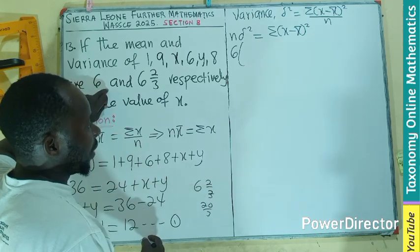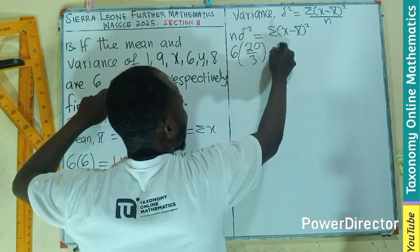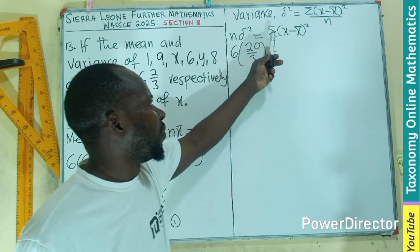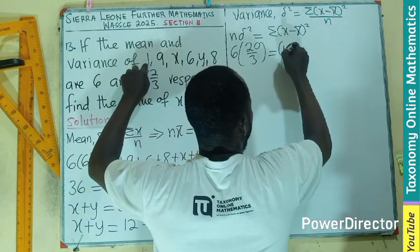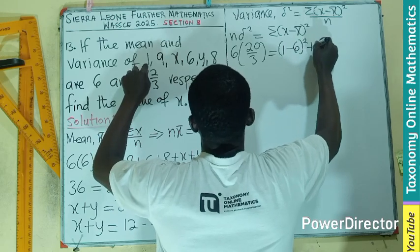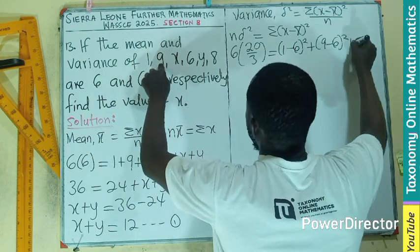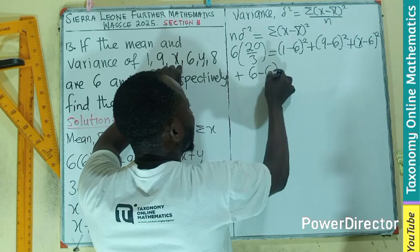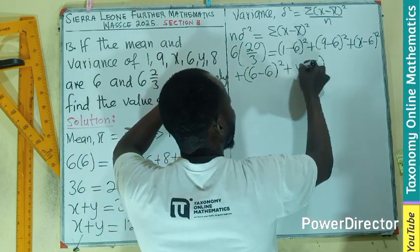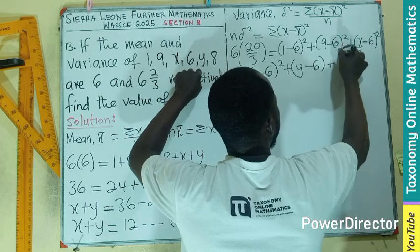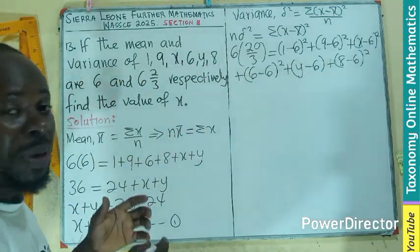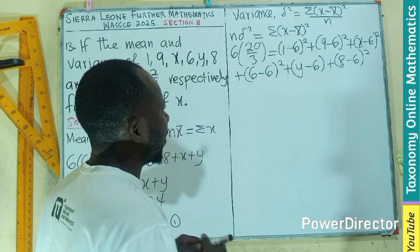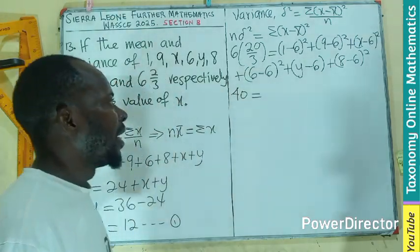So, first thing we need to do is to find the division in each of the numbers. If I pick the first number, let's say I have 1 minus 6. Let me have the square of that exactly. Here, I have my 6 multiplying the variance, which is 6 whole number 2 over 3. This will be 20 over 3.